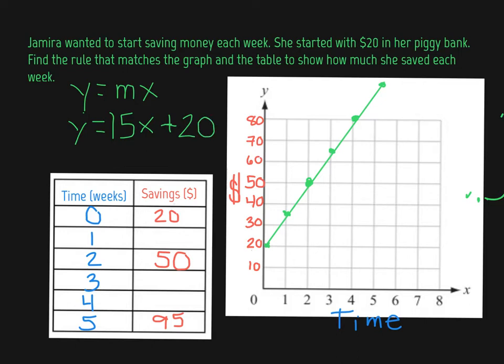So our rule is actually going to look something like this. Notice that we tagged that 20 onto the end because when x is equal to 0, remember this is x and this is y, y is actually equal to 20.